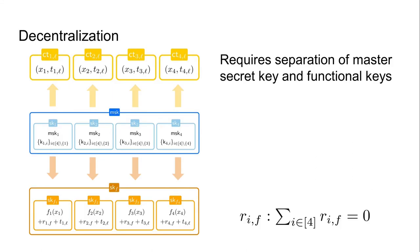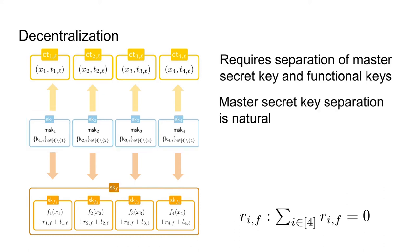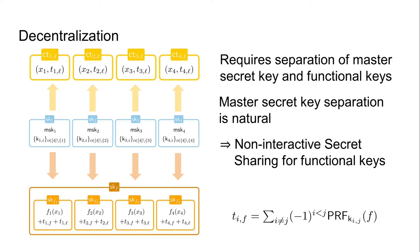To decentralize our scheme, we define functional key shares that can be combined to obtain the complete functional key, and we separate the master secret key into different secret keys for generating these shares. The separation of the master secret key is very natural, and clients can execute a key exchange protocol to agree on the different PRF keys. To separate the functional key into shares, we again rely on the PRF technique of Abdallah et al., letting clients generate the secret sharing for functional key shares by evaluating the PRF using different keys on the requested function. This concludes the decentralization of our construction.